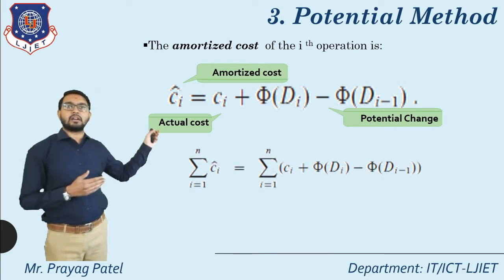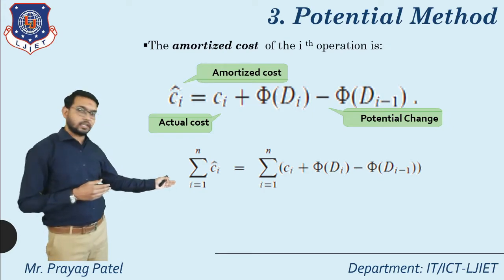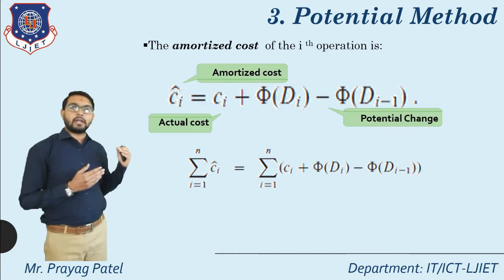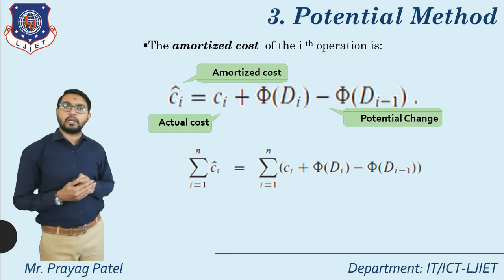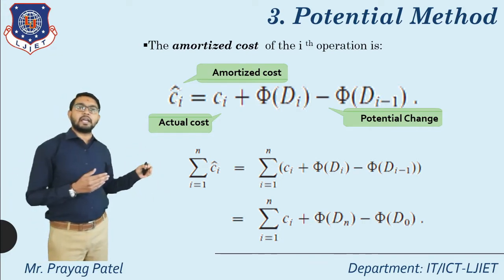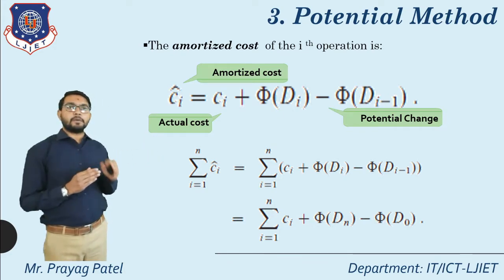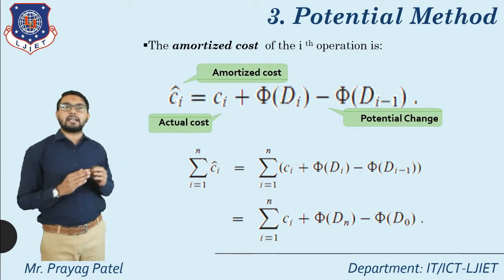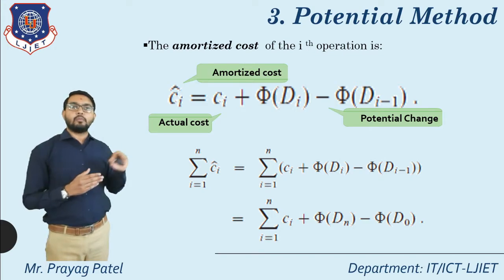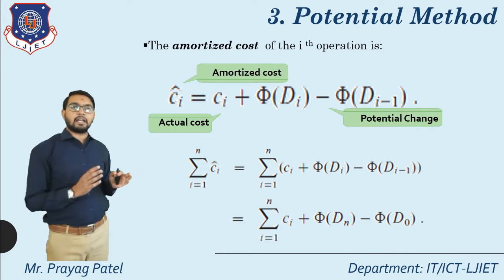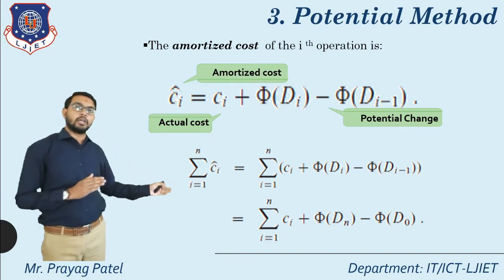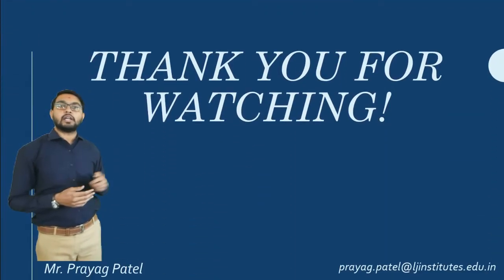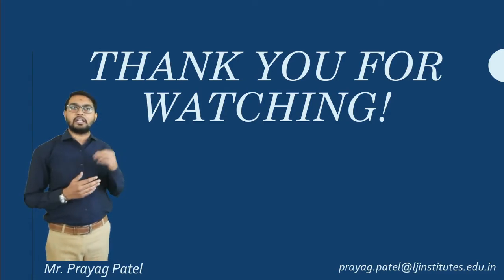Summing over all n operations: sigma from i=1 to n of C'_i equals sigma from i=1 to n of C_i plus the telescoping sum of Φ(D_i) − Φ(D_{i−1}), which collapses to Φ(D_n) − Φ(D_0), the difference between the final and initial potential. In this video lecture I have discussed amortized analysis and the three techniques of amortized analysis. Thank you for watching.